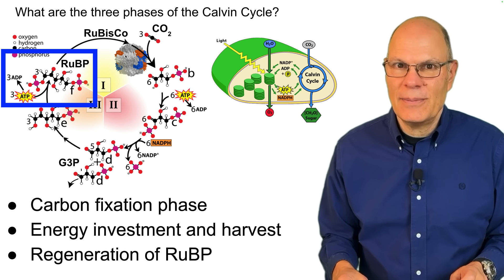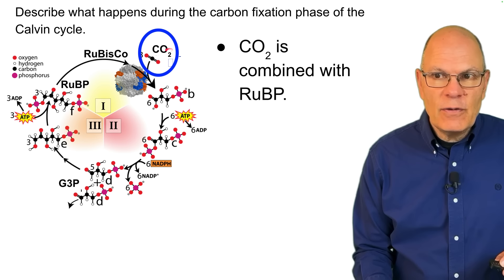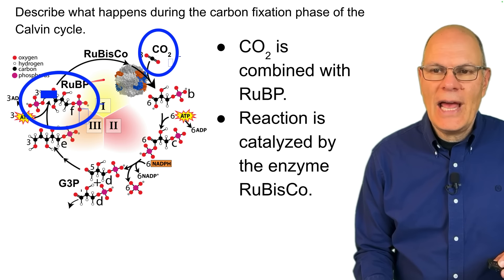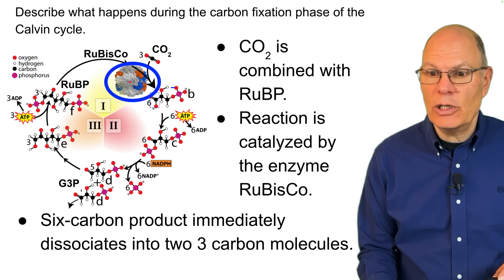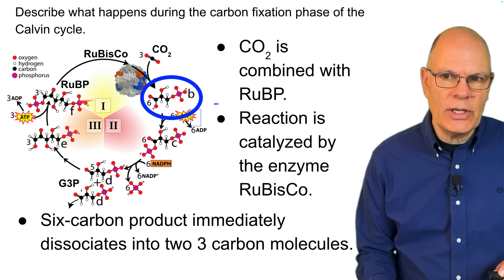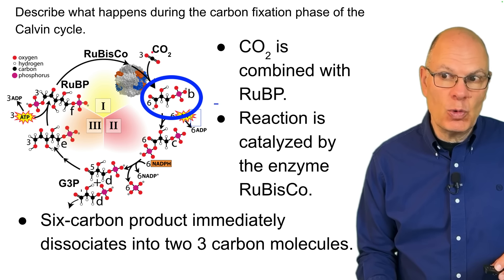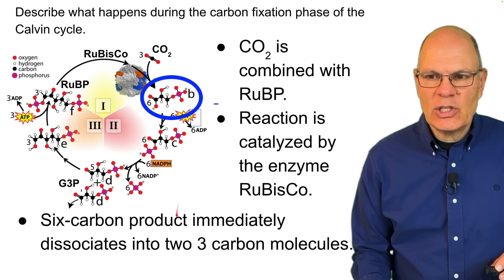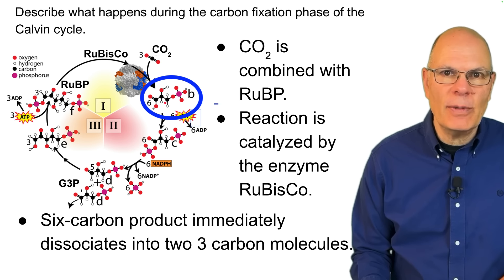Describe what happens during the carbon fixation phase of the Calvin cycle. The fixation phase begins as carbon dioxide is combined with RUBP — a reaction catalyzed by the enzyme Rubisco, possibly the most abundant protein on Earth. RUBP has five carbons and CO₂ has one carbon, which would create a six-carbon product — but that six-carbon product immediately dissociates into two three-carbon molecules, ending the carbon fixation phase.